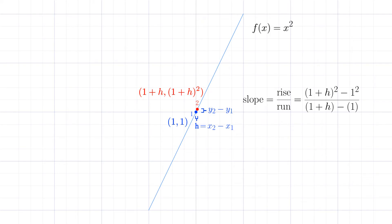Simplifying, the slope is (2h plus h squared) divided by h. Since h is a non-zero constant, we can cancel h and we get a slope of 2 plus h. Since h is an infinitely small positive number, we can ignore h and simply say that the slope is 2.